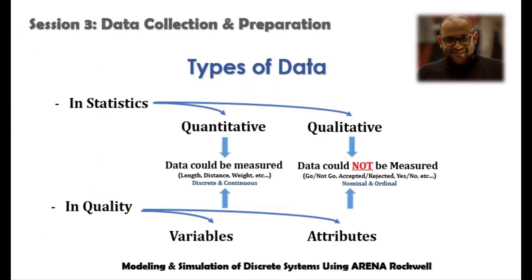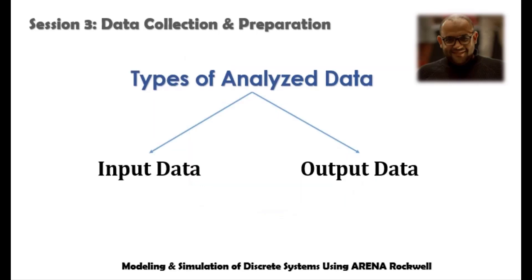From the statistics point of view, data is categorized as quantitative and qualitative types. From a quality control point of view, data is categorized as variable and attributes. Please differentiate between variable and attributes in quality control and in Modeling and Simulation language, as explained in the previous video. In Modeling and Simulation, we have two different types of data: input data, which will be our core in this video, and output data, which is considered the results of simulation and will be covered at the end of the course.